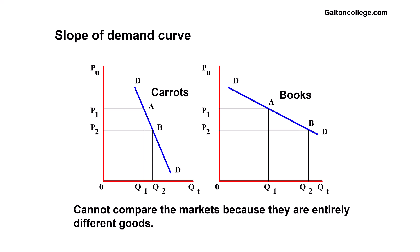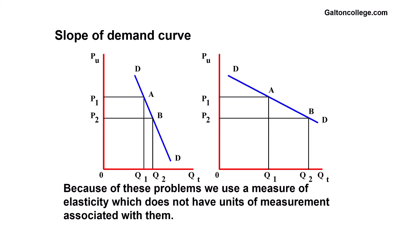We just simply can't compare two items, two diagrams, because they're totally different goods. Carrots and books. Carrots and books don't have very much in common. So, we can't just look at them and say carrots are more elastic or less elastic or whatever. They're two totally different products. So, they can't be compared, despite what we sometimes say in classes.